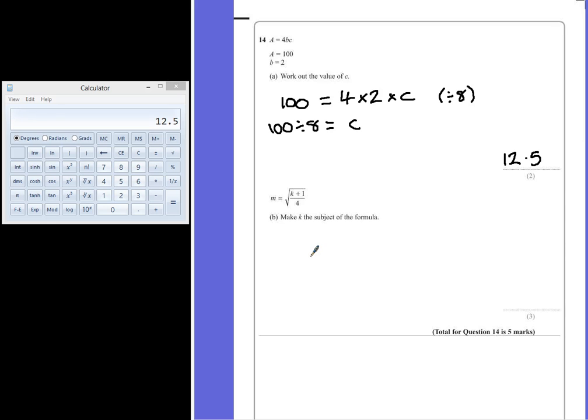To do this, you have to work backwards through the order that you would calculate it. I would do K plus 1, then divide by 4, and then square root the whole answer. So to invert that, we're going to undo each step.